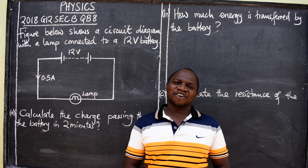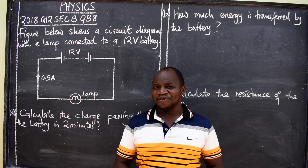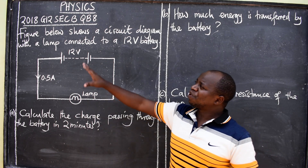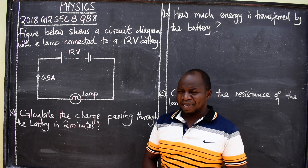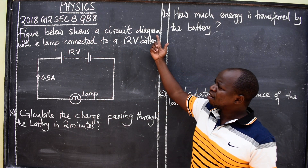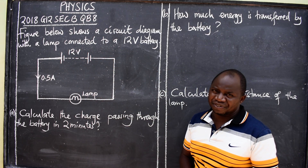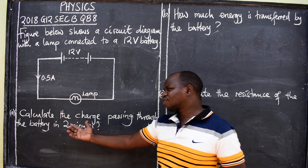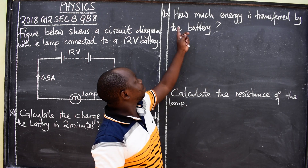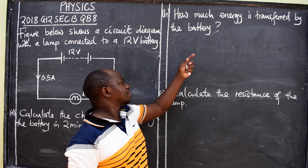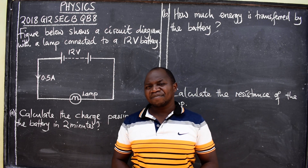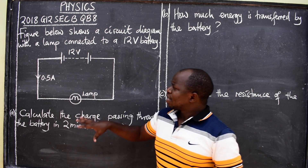How are you, ladies and gentlemen? Hope you are well. Your teacher here is doing well. This is Physics Science One. We have a question coming from 2018 Grade 12, Section B, Question B8. The question states: the figure below shows a circuit diagram with a lamp connected to a 12-volt battery. We have questions — the first part: calculate the charge passing through the battery in two minutes. Part B: how much energy is transferred by the battery? Part C: calculate the resistance of the lamp. This question comes from the topic called current electricity.